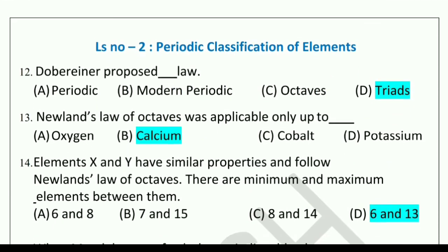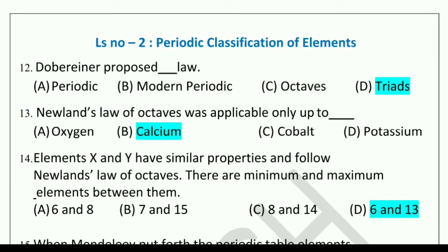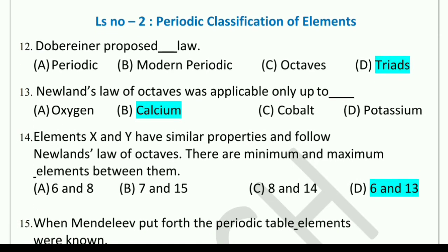Now children, we will see the question bank of lesson number 2, Periodic Classification of Elements. Dobereiner proposed dash law. Options: periodic, modern periodic, octaves, or triads. The correct answer is triads.